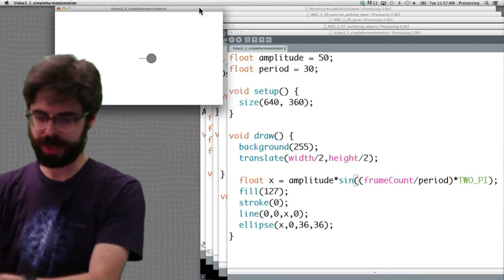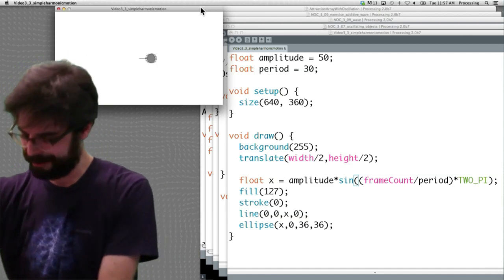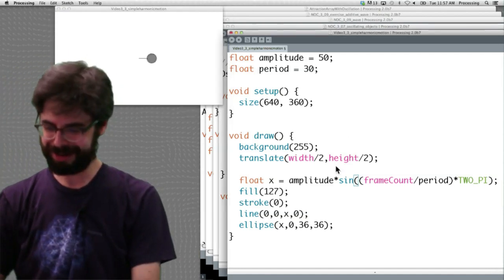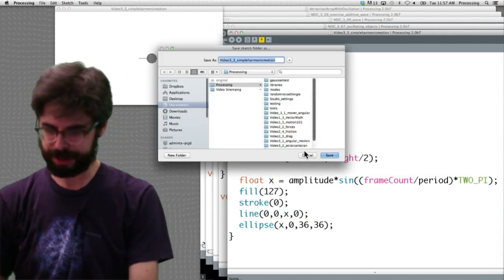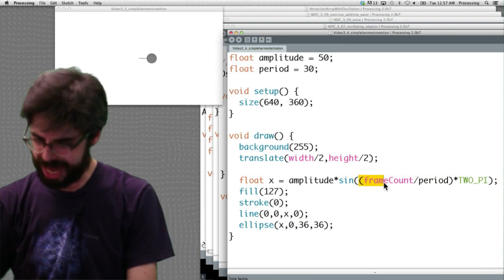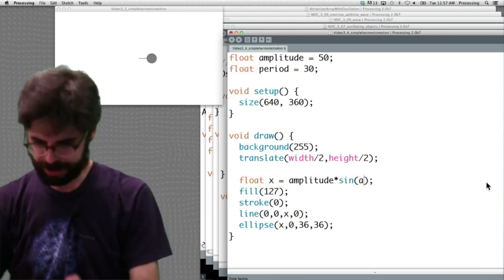So here we are over here. We're going to simplify this example. Fumbling, fumbling. Here we go. We're going to simplify this example. I'm going to save it as something. And I'm going to say, hey, you know what? Just put a variable in there. Call it angle.